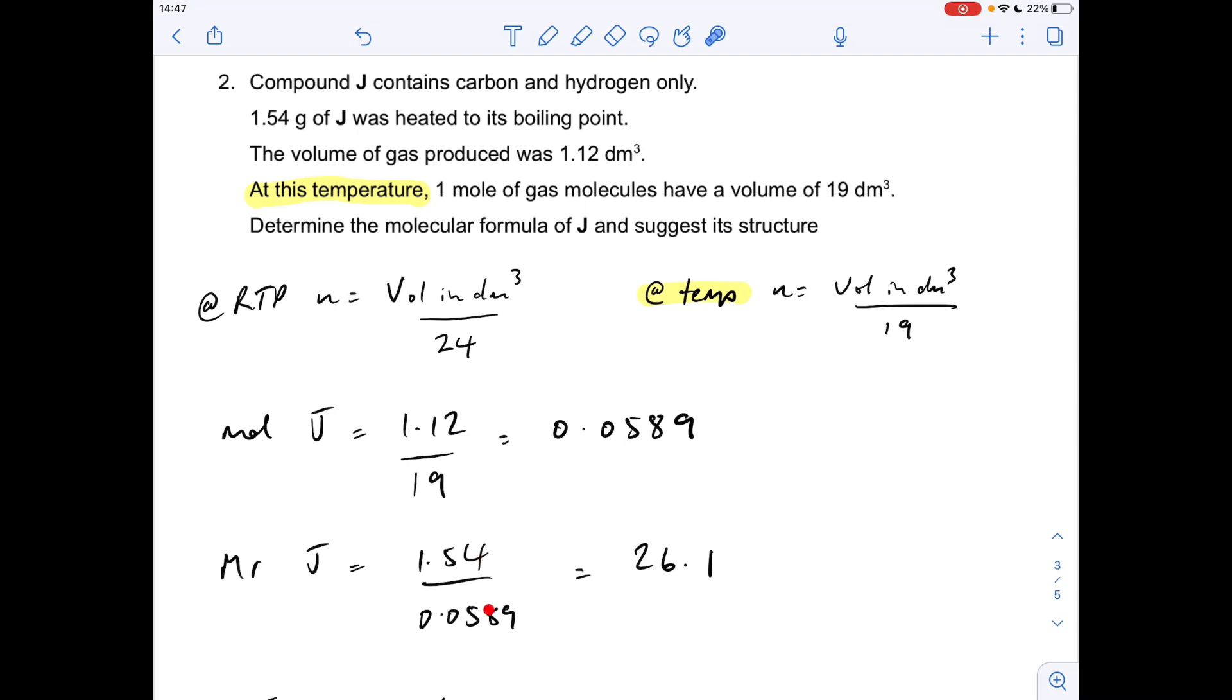MR of J, mass over moles, 26.1. It's made from carbon and hydrogen only, so you're going to have two carbons, that gets you to 24, and two hydrogens, gets you to 26.